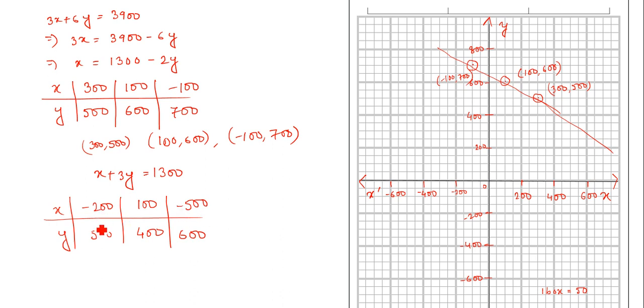So we will plot the points minus 200 comma 500. Now this is my minus 200 comma 500. Later 100 and 400. 100 and on the y axis it will be 400. That is 100, 400.